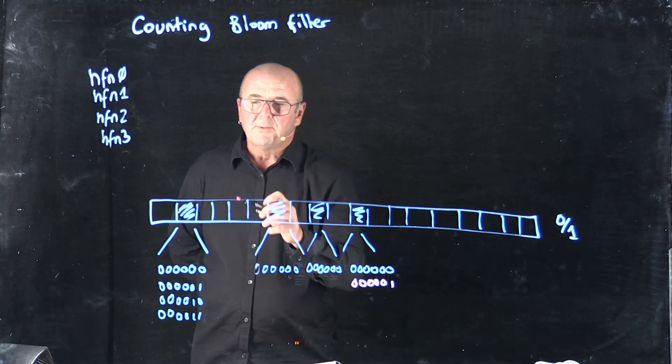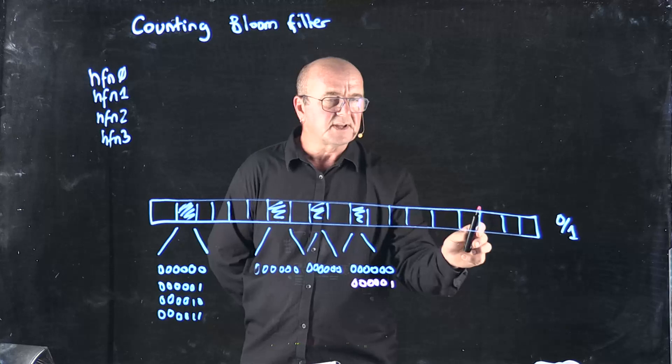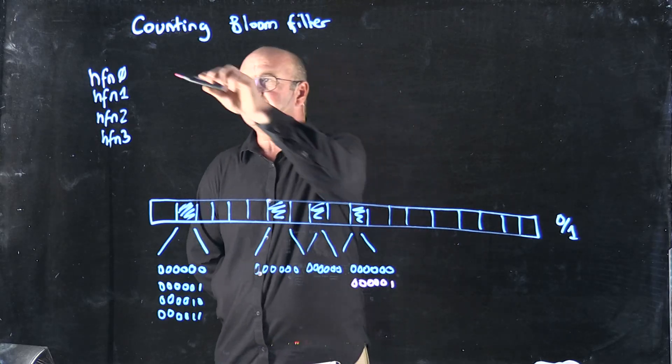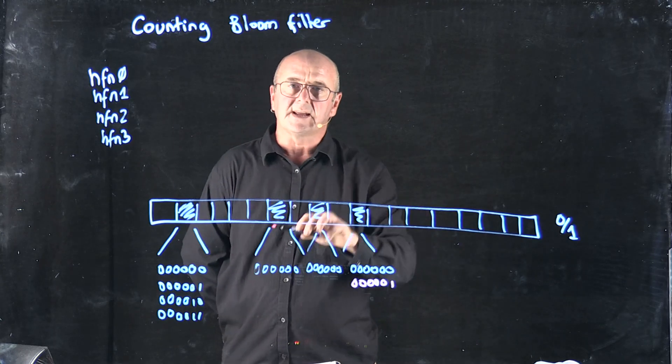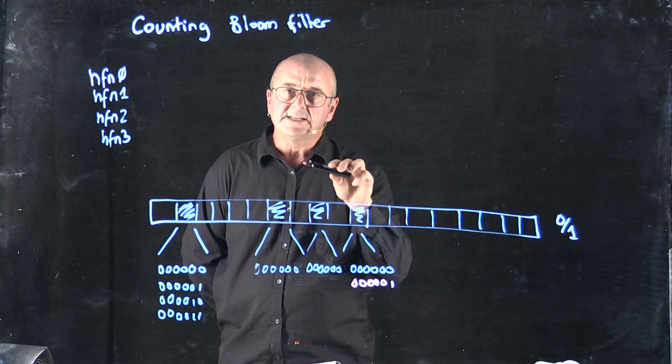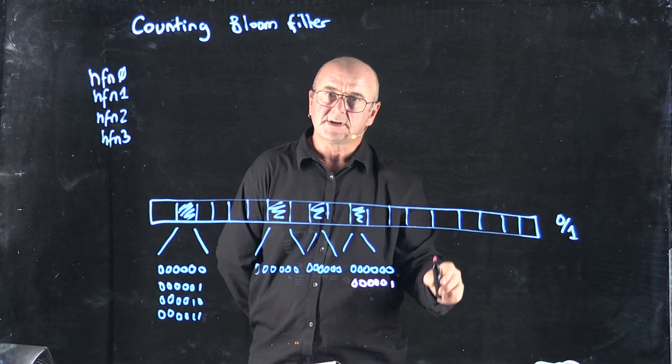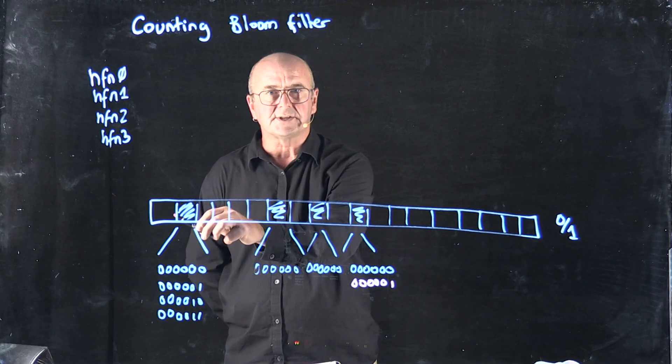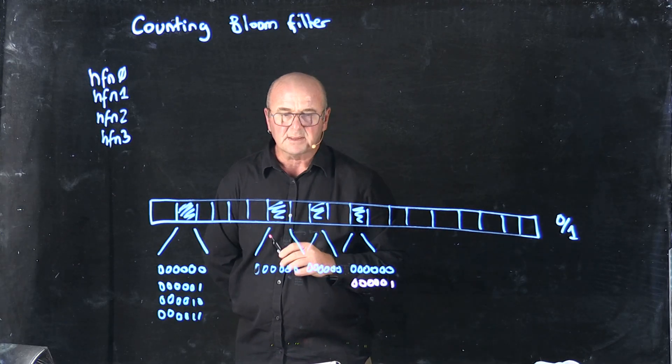And so when I come back and I say how many times have I seen each of the k-mers, what I do is I get the hash functions, I get the values, I go to the locations and I get values. I may not always get the same value for each of my bins because in some of my bins I'm going to have collisions and some of them are going to tell me different answers.